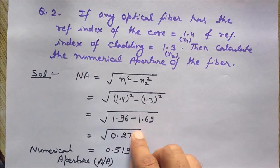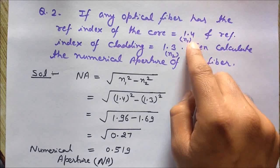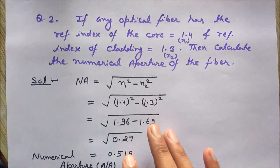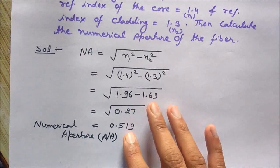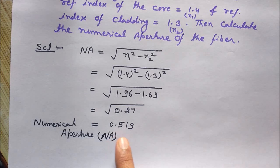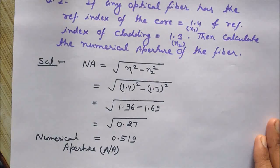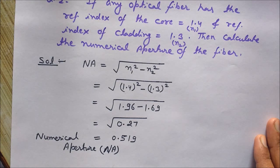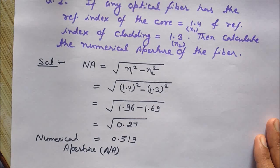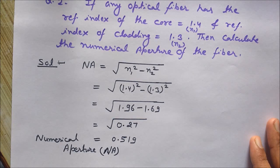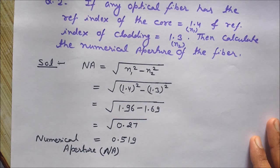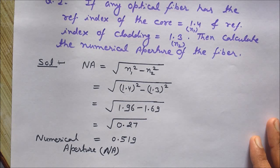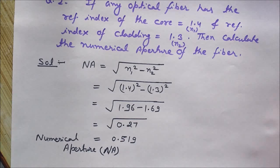So just put the values of n1 and n2 here and you will get the result as 0.519. So this is the numerical aperture. I hope you like the video, this is quite a simple problem but it is very useful when we should know what kind of formula we have to use to find the numerical aperture as per the given conditions or information. In the next video we will see more such problems based on optical fibers.